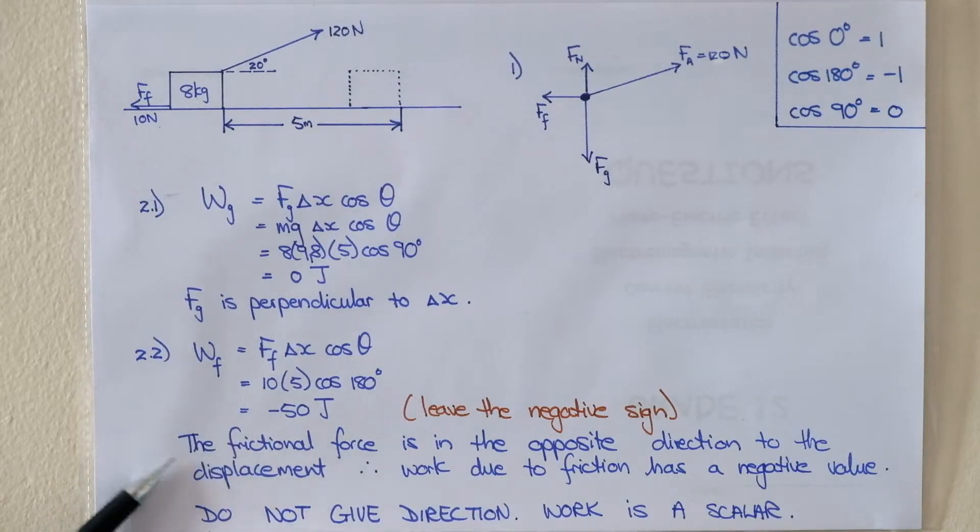We get a negative answer because the frictional force that is doing the work is in the opposite direction to the displacement. Work due to friction will always have a negative value.